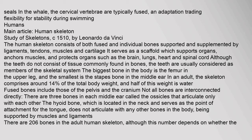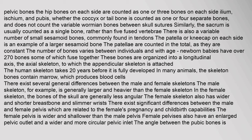There are three bones in each middle ear called the ossicles that articulate only with each other. The hyoid bone, located in the neck and serving as the point of attachment for the tongue, does not articulate with any other bones in the body. There are 206 bones in the adult human skeleton, although this number depends on whether the pelvic bones are counted as one or three bones on each side (ilium, ischium, and pubis), and whether the coccyx or tailbone is counted as one or four separate bones. There is also a variable number of small sesamoid bones commonly found in tendons. Newborn babies have over 270 bones, some of which fuse together. These bones are organized into a longitudinal axis, the axial skeleton, to which the appendicular skeleton is attached. The human skeleton takes 20 years before it is fully developed.